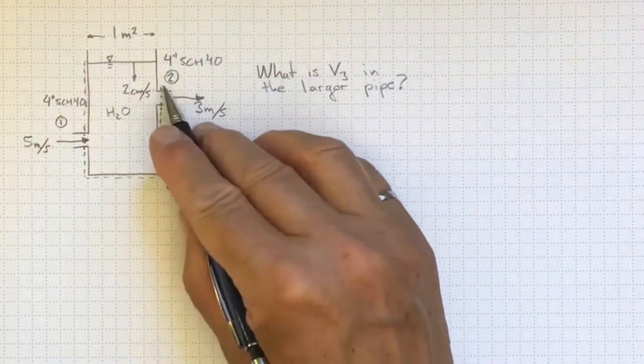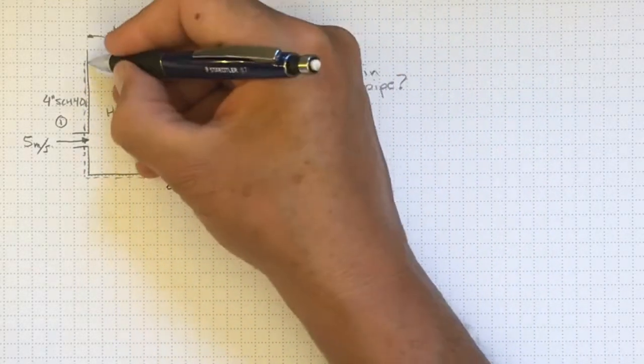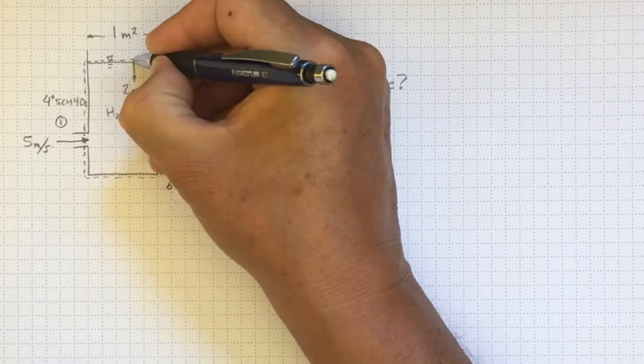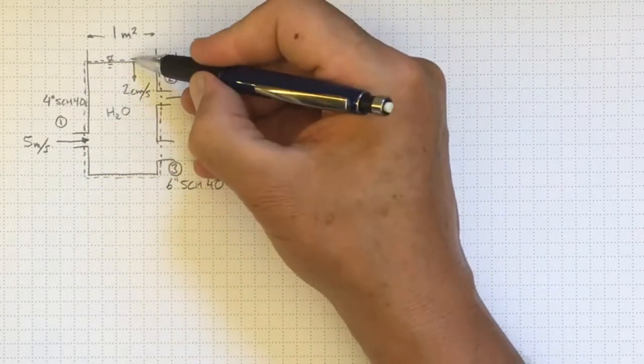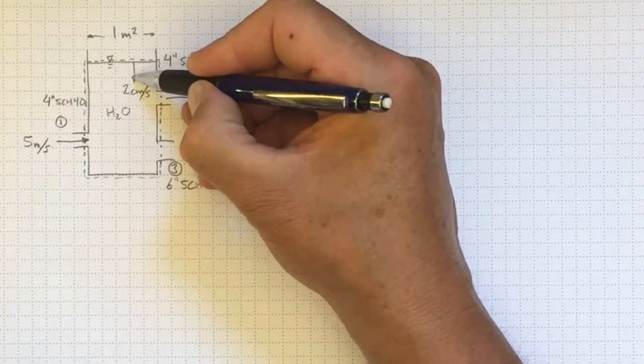And I'll make the control volume boundary just above this surface here, so I can take into account the fact that this surface is dropping.